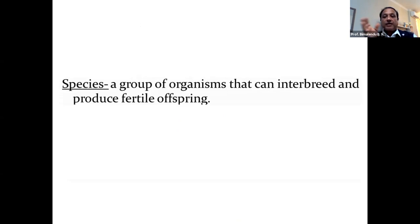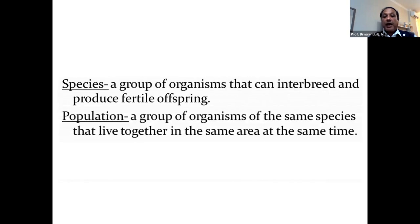A quick recap of some fundamental definitions: by 'species' we mean a group of organisms that can interbreed and produce fertile, viable offspring. By 'population' we mean a group of organisms of the same species — that is very important — individuals that belong to the same species and live together in the same area at the same time.